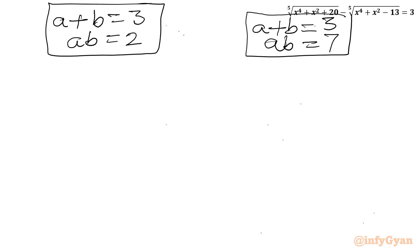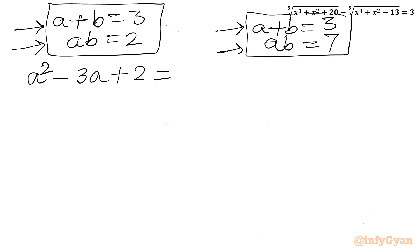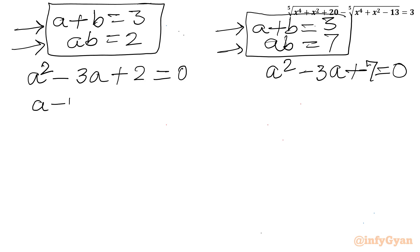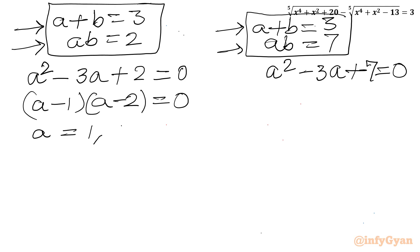I can think of one quadratic equation whose roots are a and b — a + b is the sum of roots and ab is the product of roots. For the first system: a² − 3a + 2 = 0, which factors as (a − 1)(a − 2) = 0, giving a = 1 or a = 2. For the second system: a² − 3a + 7 = 0; discriminant = 9 − 28 = −19, which is negative, so it generates complex solutions. We reject this system as we are looking for real values only.